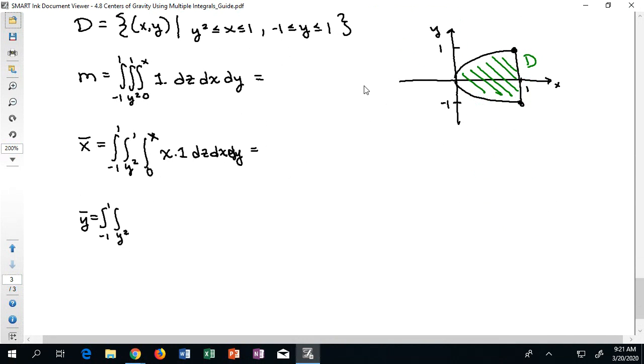For my y-bar, still going from negative 1 to 1, y squared to 1, 0 to x, but now it's y times 1. And for my z-bar, I'm going to get these values with z times 1. So I'm going to ask you to go ahead and pause the video and see if you can actually try to crunch out what the value of each one of these integrals is going to look like. It looks like I forgot to put in that that first integral is super important because I'm going to have to do 1 over the mass in front of each of these so that I can fully calculate them out. But again, I'll ask you to go ahead and pause the video so you can try to crunch these out on your own, and then you can check back with my answers when you hit play.